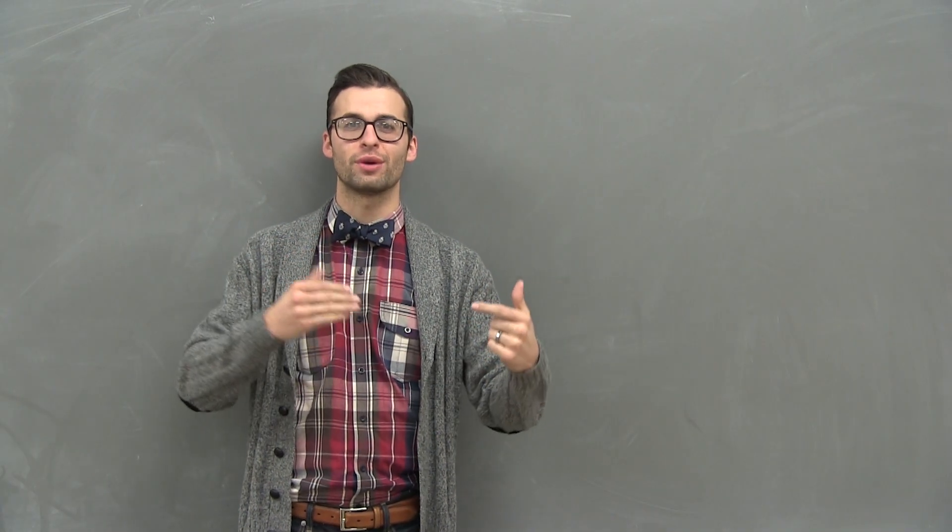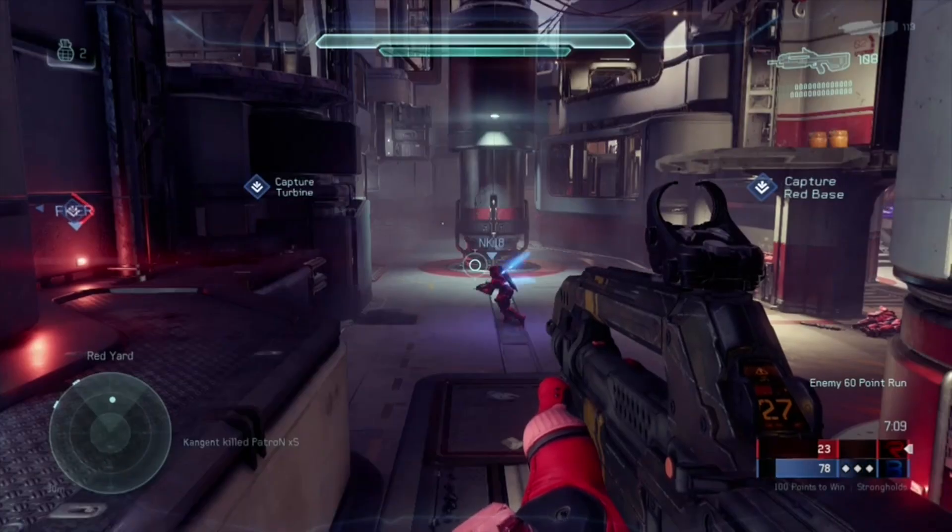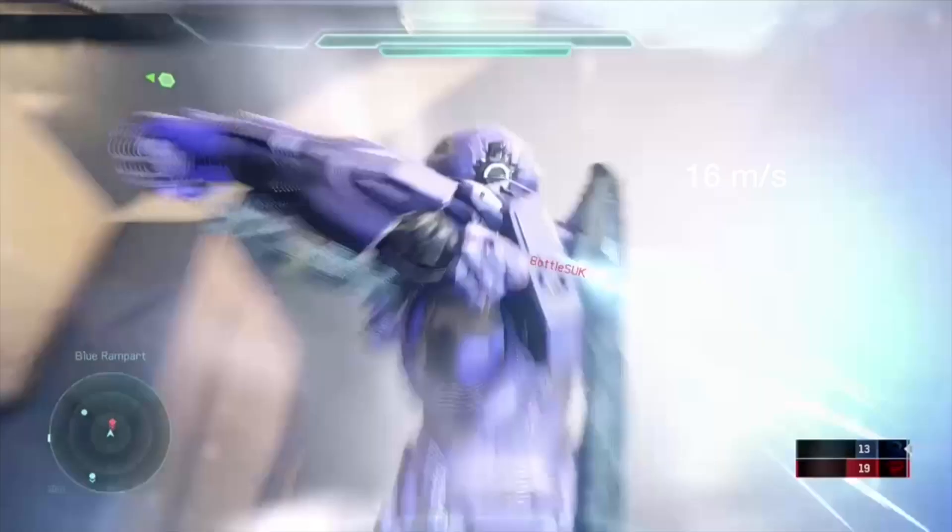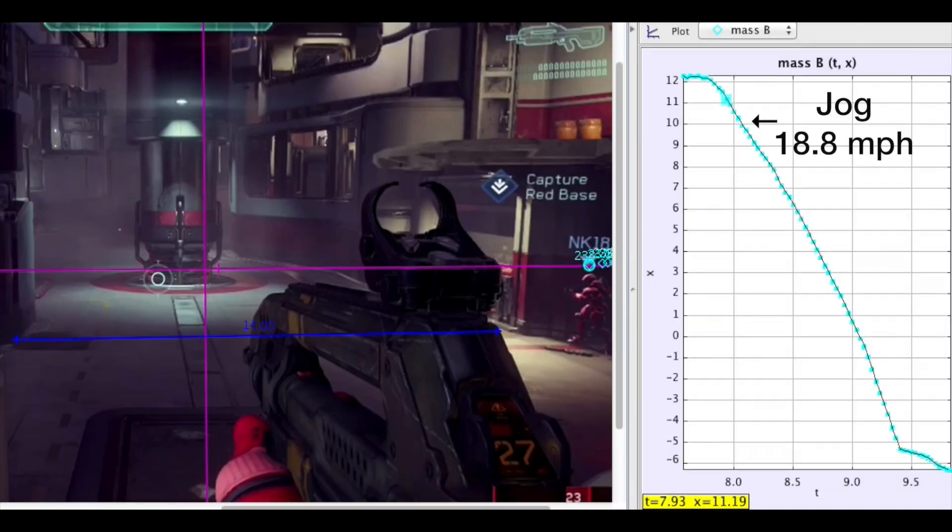Then with the thrust, you increase your velocity from sprint to about 16 meters per second. This is 35.8 miles per hour.